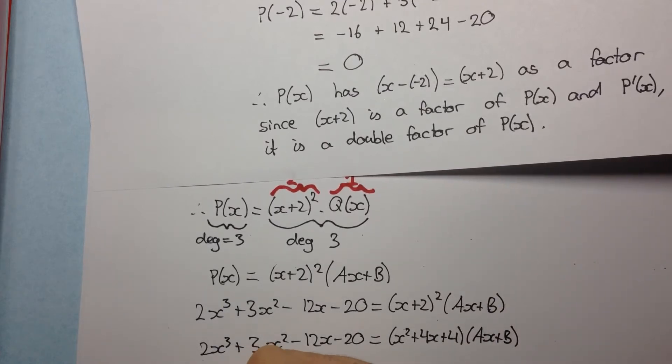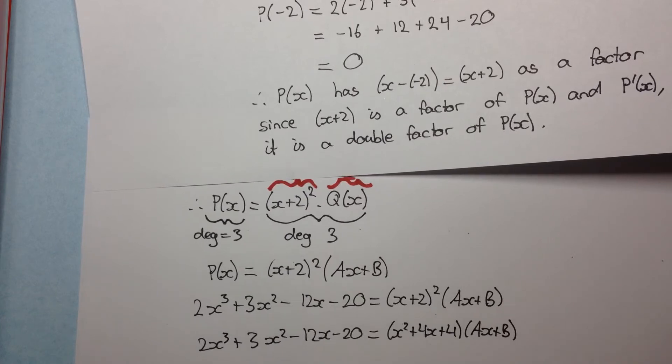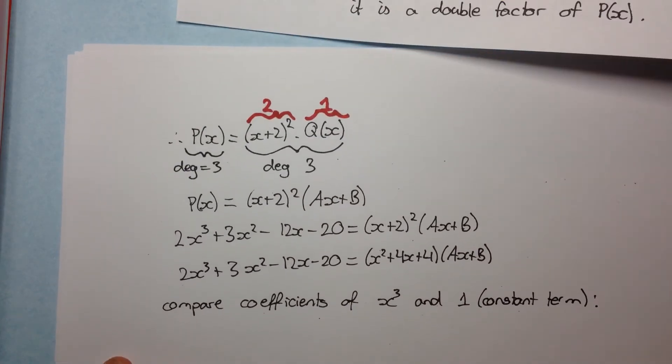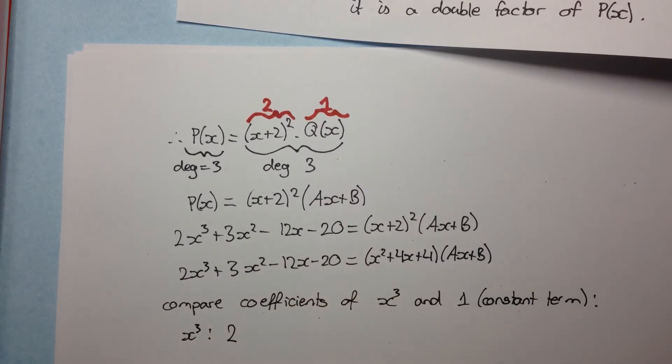So if we compare the coefficients of x³ and 1, which is just a constant term, this is what we get. So we get from x³. Now the coefficient of x³ on this side, that's a 2. Now that must be equal to, actually needs to be identical to, the coefficient of x³ on this side.